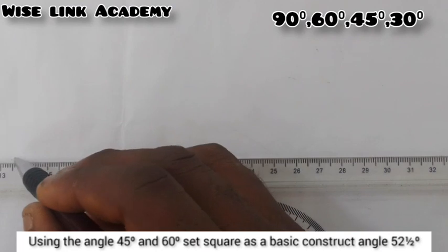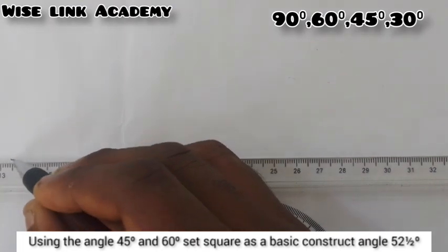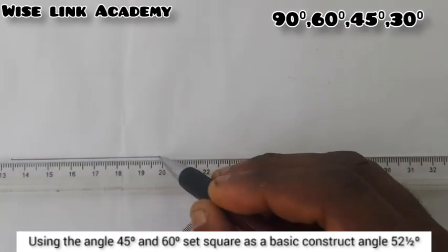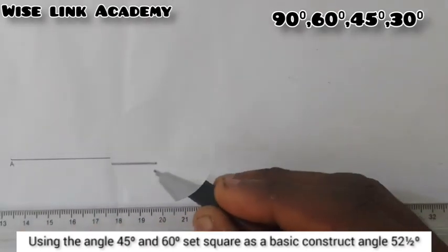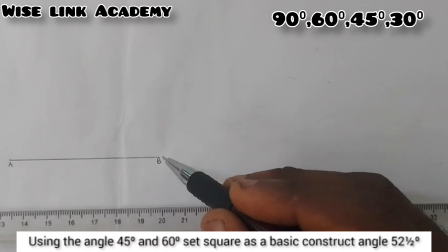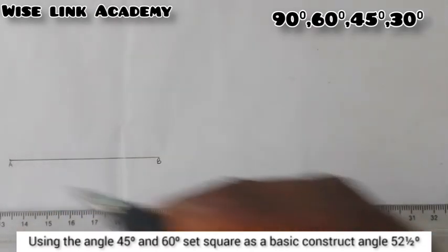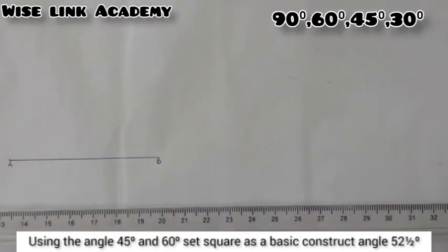Make sure it's a thick line. I'll draw a thick horizontal line this way. I can call this my point A and call this my point B. So we said to produce angle 52.5, we need to construct 60 and 45.